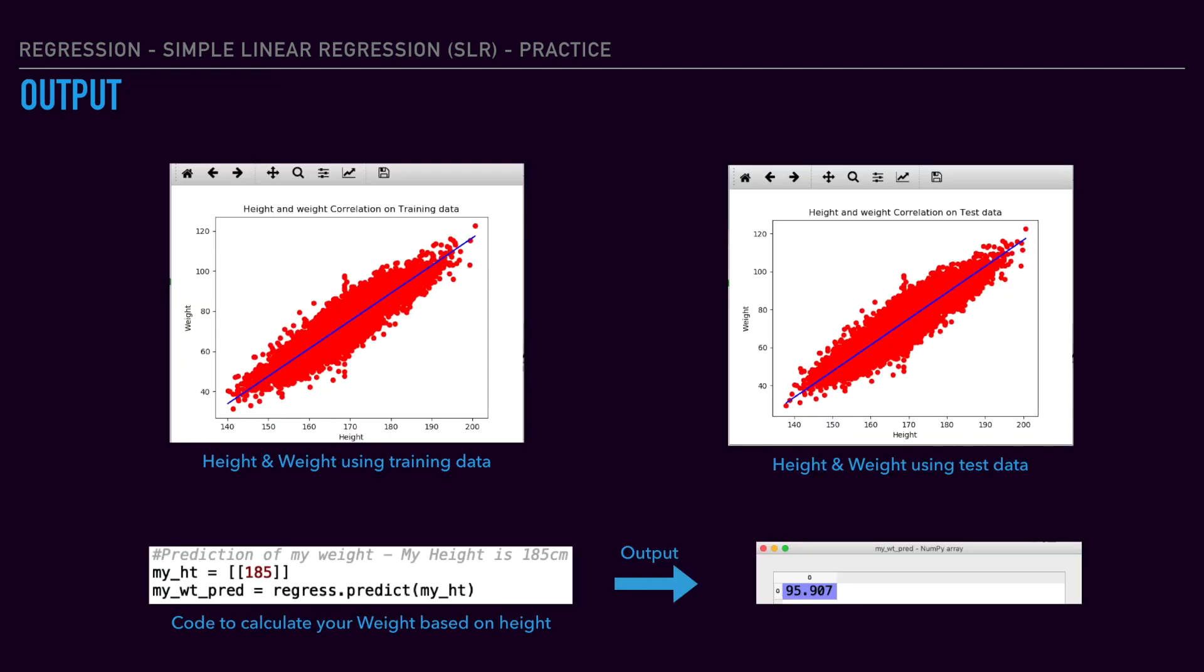We can use the training data using the output. If you see the linear regression line, the best fit line is crossing the exact center with the minimum distance from all the data points. If you see the graph on the right top, you can use the test data.